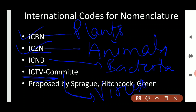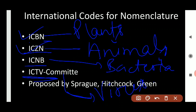ICZN is International Code for Zoological Nomenclature. Then ICNB — International Code of Nomenclature of Bacteria — is related to bacteria. And ICTV, whose full form is International Committee on Taxonomy of Viruses, deals with viruses. Note all four down — they are very important from the exam point of view.